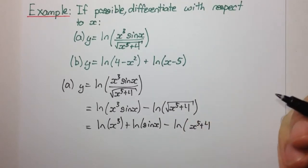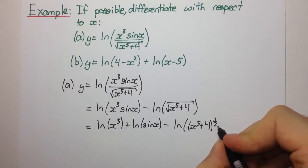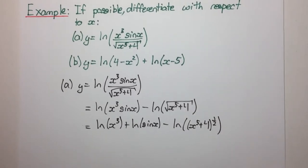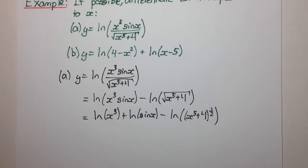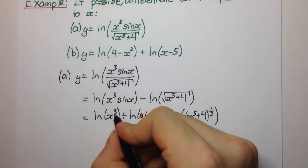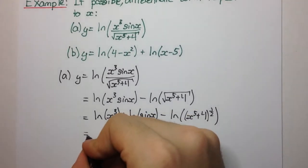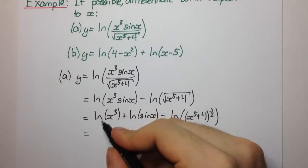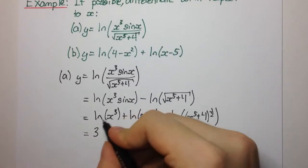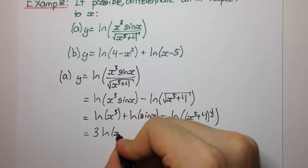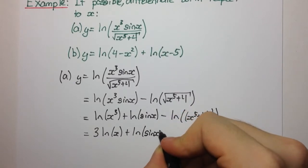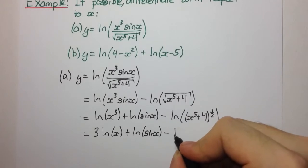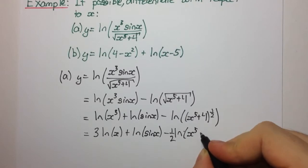And when we take the square root, that's the same as raising to the power 1 half. So let me write it like this. Okay, now there's one more thing that we can do to simplify this as simple as we can get it. We can bring down all these powers as coefficients. So when we have a power inside our log, we can bring it down as a coefficient. We're going to have 3 times ln of x plus ln of sin x minus 1 half, which is the power here, times ln of x to the 5 plus 4.